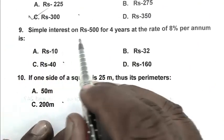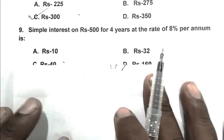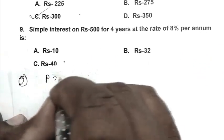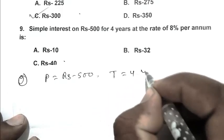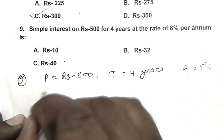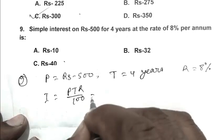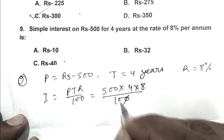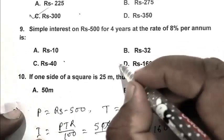Question number 9: Simple interest on Rs 500 for 4 years at the rate of 8% per annum is? We can calculate it from formula. Principal Rs 500, time 4 years, at the rate of 8%. So interest equals PTR by 100. 500, T4, R8 by 100, equals 160. So D is the right answer.